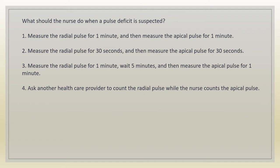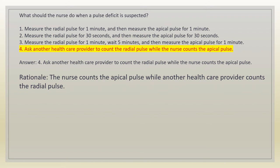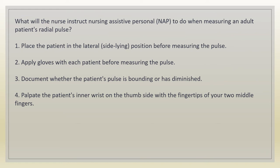To measure a pulse deficit, the nurse should ask another healthcare provider to count the radial pulse while the nurse counts the apical pulse. Rationale: the nurse counts the apical pulse while another health care provider counts the radial pulse simultaneously.